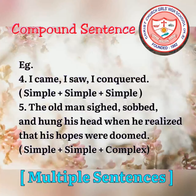Let's study two more examples of compound sentences. Example four: 'I came, I saw, I conquered.' Example five: 'The old man sighed, sobbed and hung his head when he realized that his hopes were doomed.' The first sentence is made up of three simple sentences, whereas the fifth example is made up of two simple sentences and a complex sentence. Such compound sentences are called multiple sentences — another subcategory of compound sentence.